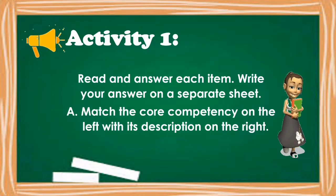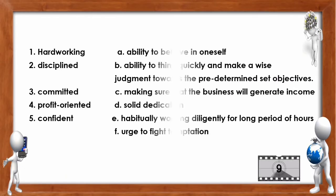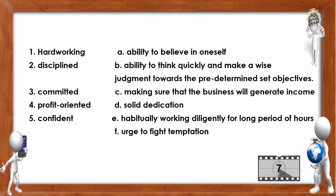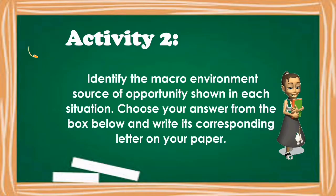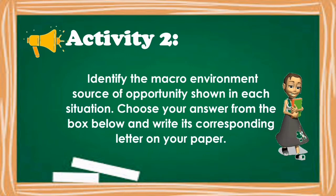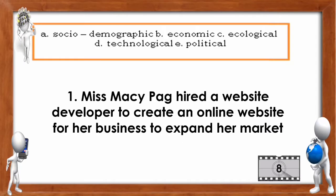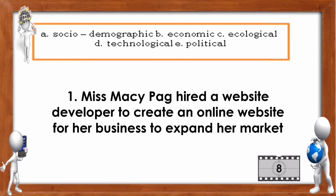For Activity 1, read and answer each item. Write your answer on a separate sheet. Match the core competency on the left with its description on the right. Make sure to observe time. For Activity 2, identify the macro environmental source of opportunity shown in each situation. Choose your answer from the box and write its corresponding letter on your paper. Strictly no erasures. Don't forget to observe time.